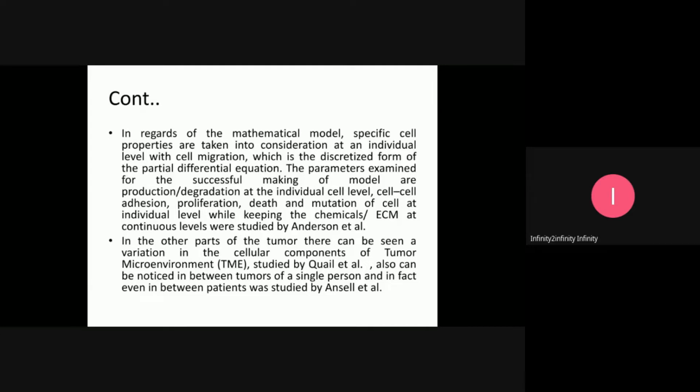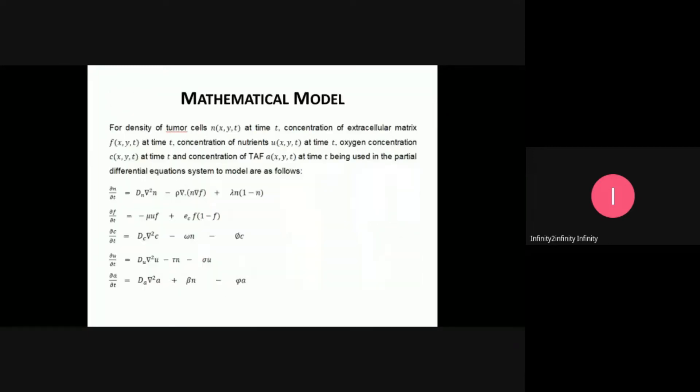In this study, the mathematical model formulation includes five partial differential equations: N is tumor cell density, F is extracellular matrix (ECM) concentration, U is nutrient concentration, C is oxygen concentration, and A is tumor angiogenesis factor concentration. New terms are added including logistic growth, oxygen decay, and nutrient decay.